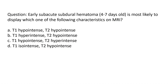In this video we will be discussing an MCQ about MRI findings in intracranial hemorrhage. This particular question specifically asks about a subdural hematoma — early subacute subdural hematoma which is four to seven days old. The question asks what the MRI finding is: T1 hypo/T2 hypo, T1 hyper/T2 hypo, T1 hypo/T2 hyper, or T1 iso/T2 hypo intense.